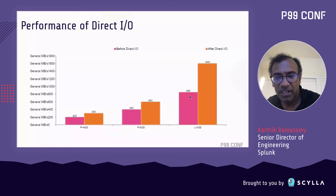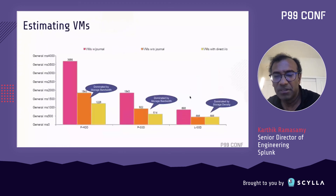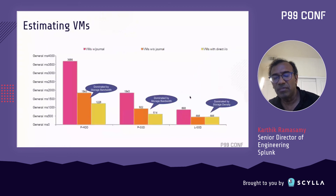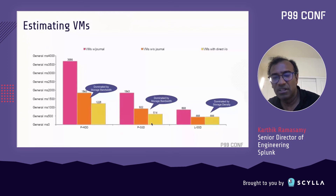Based on the direct I/O implementation, the estimated number of VMs improved: PHDD dropped to 1,228 nodes and PSSD to 640 nodes. Local SSDs did not change significantly because their count is dominated by storage density rather than bandwidth.